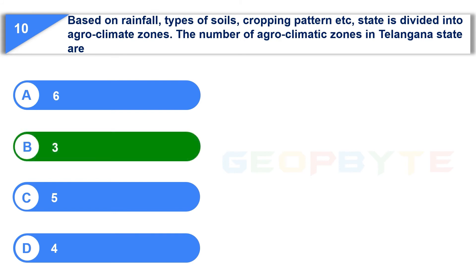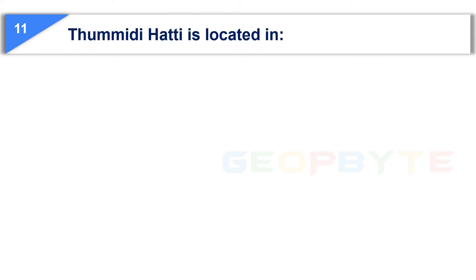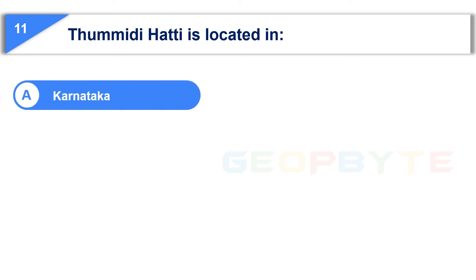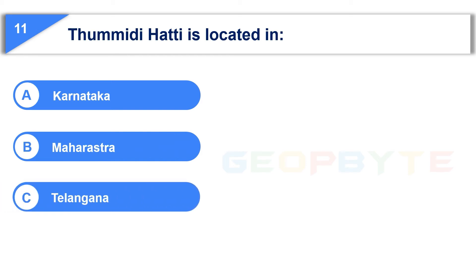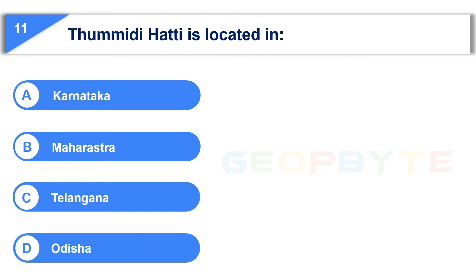The next question is: Tummiti Hattie is located in — Option A: Karnataka, Option B: Maharashtra, Option C: Telangana, Option D: Odisha. Your time starts now.